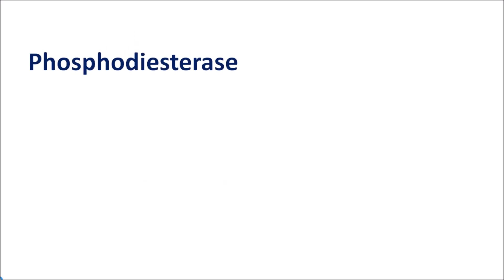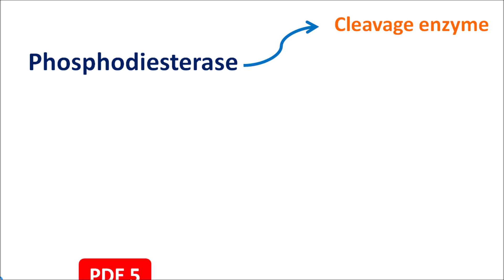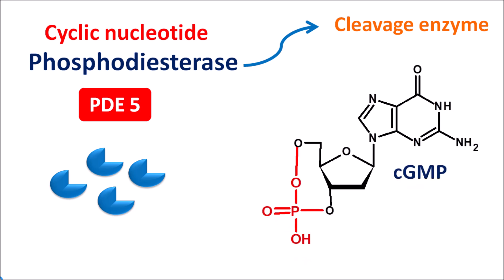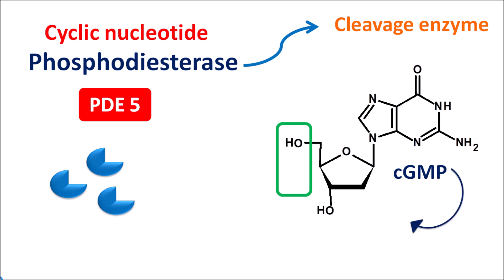Phosphodiesterase is a cleavage enzyme that cleaves phosphodiester bonds, which are present in many molecules. PDE5 does not act on all types of phosphodiester bonds — it particularly acts on cyclic nucleotide phosphodiesterase linkages. For instance, cyclic AMP and cyclic GMP are cyclic nucleotides on which these enzymes can act, but PDE5 mainly targets cyclic GMP. The cyclic phosphodiester bond in cyclic GMP is cleaved by PDE5, converting cyclic GMP into GMP.